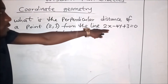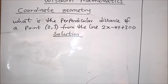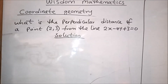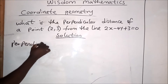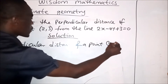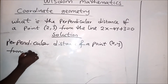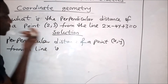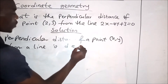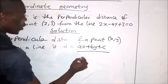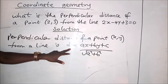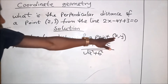This is the equation of a line, while this one is a point. In coordinate geometry we have a formula for finding the perpendicular distance of a point from a line. The perpendicular distance d of a point x comma y from a line is: d equals ax plus by plus c, all over the square root of a squared plus b squared.